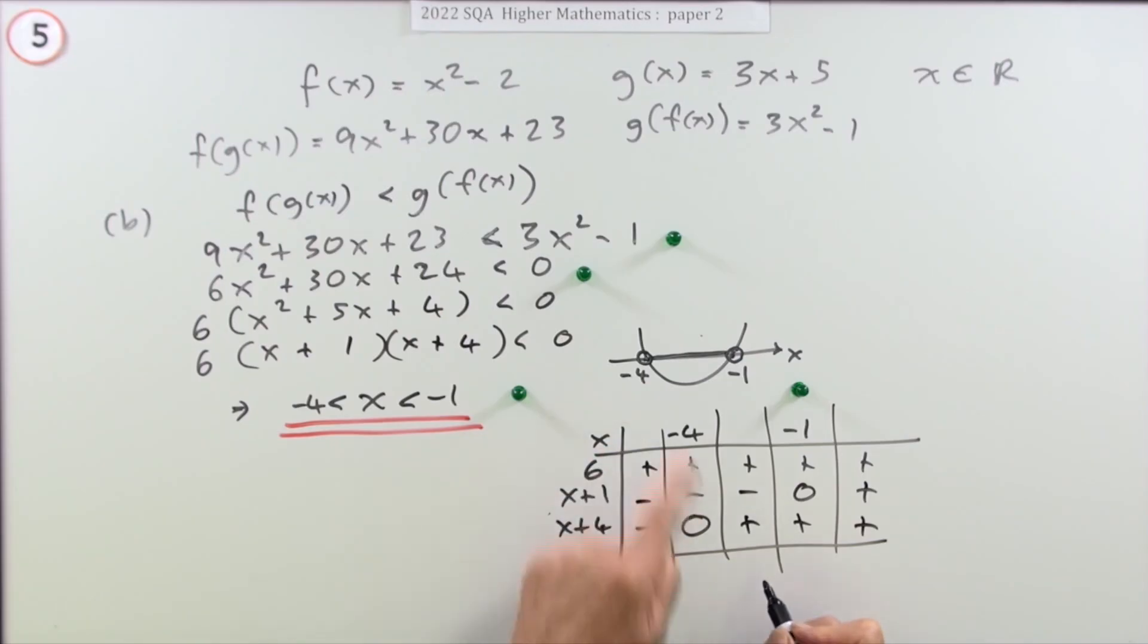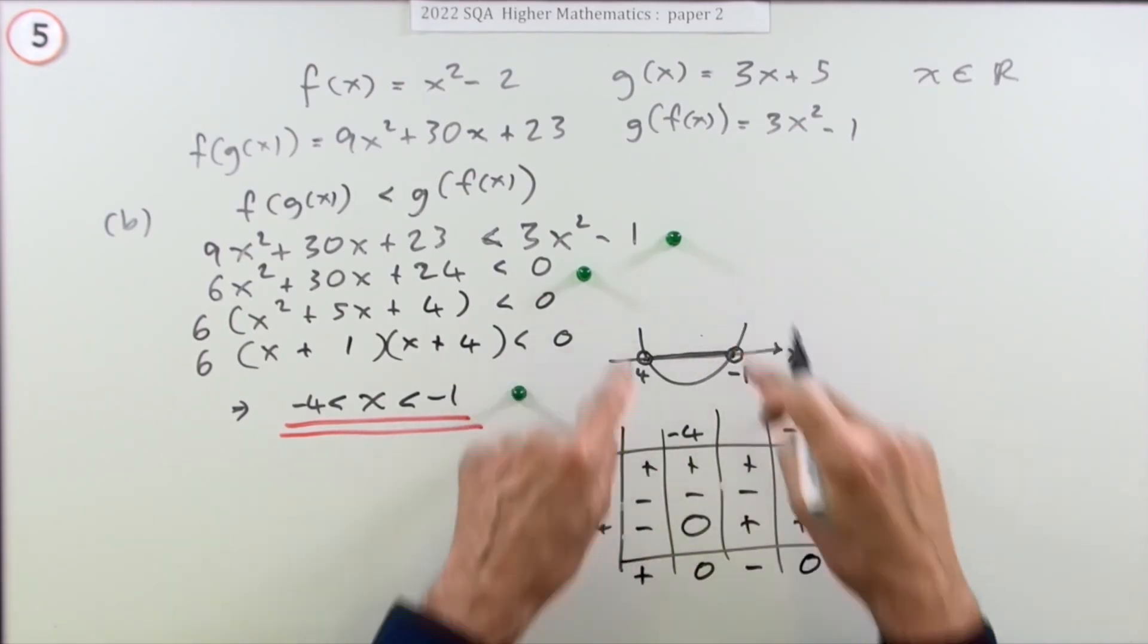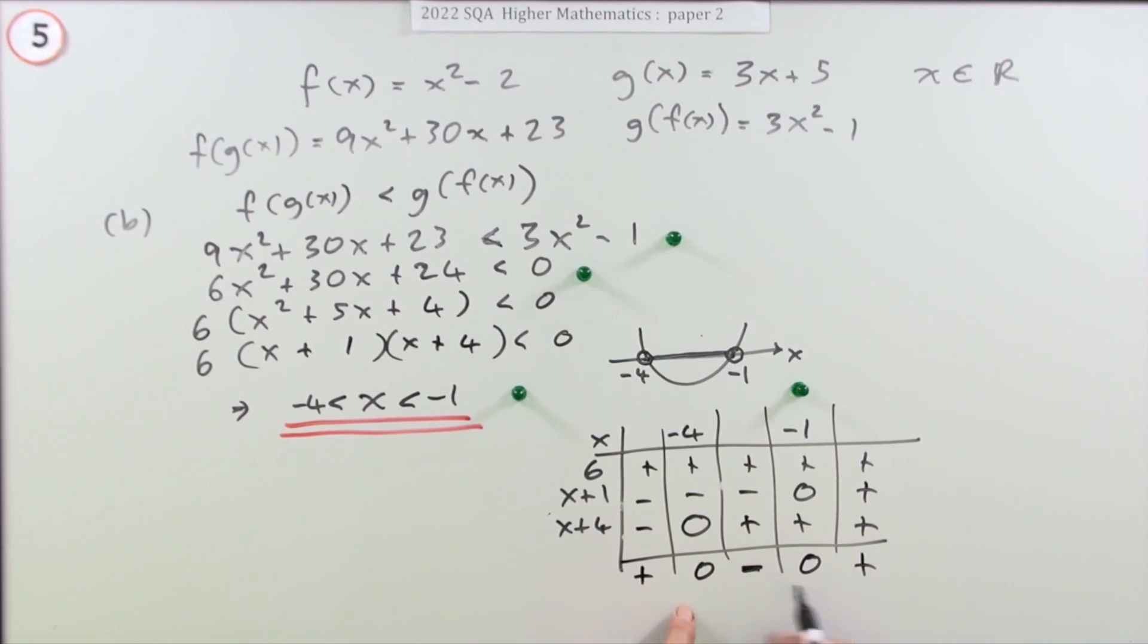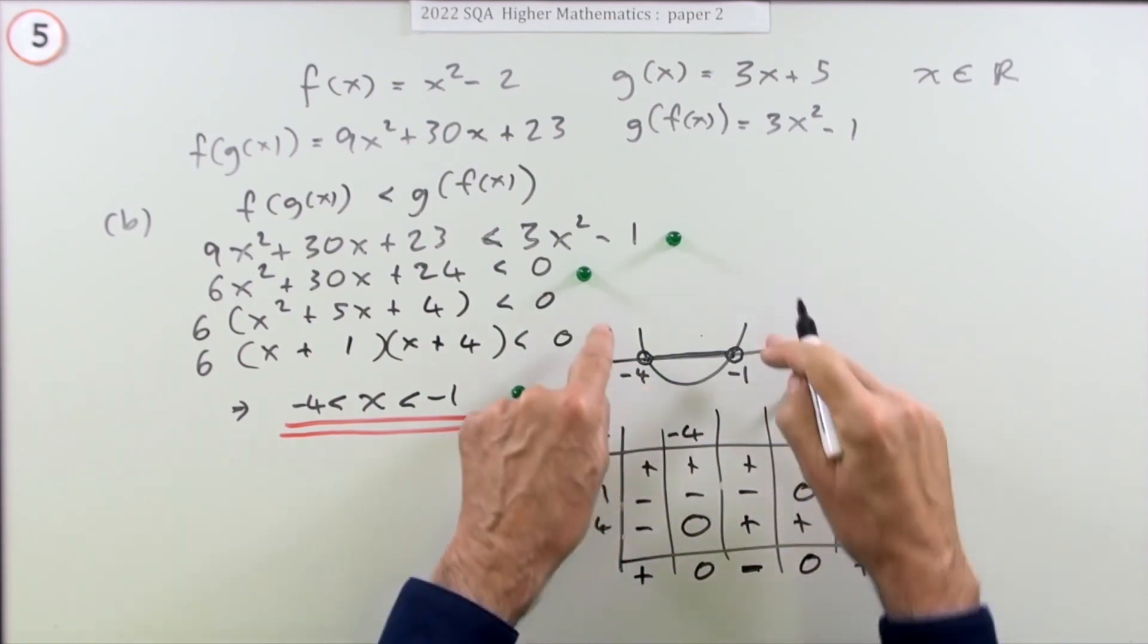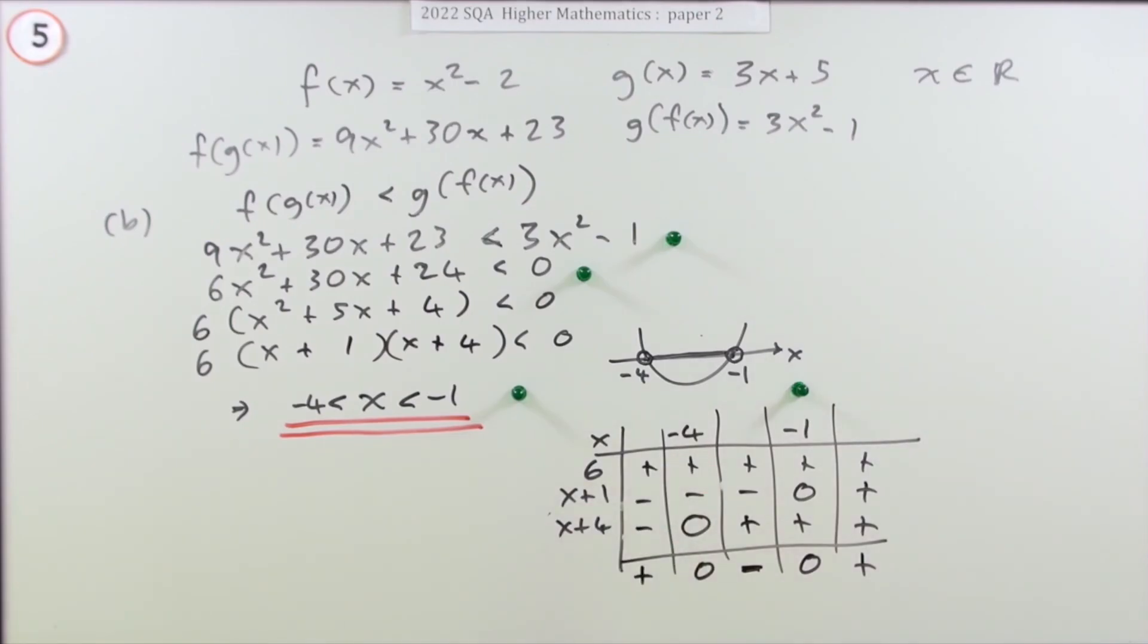When you multiply them together: two negatives make a positive; one negative makes it negative. You can see the answer - it's negative between the two zeros.